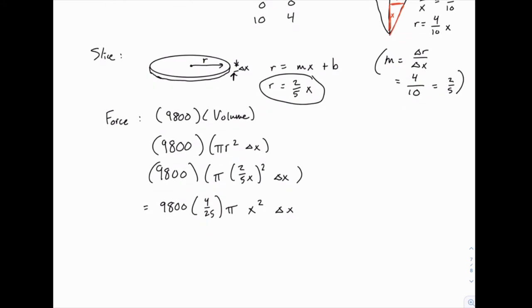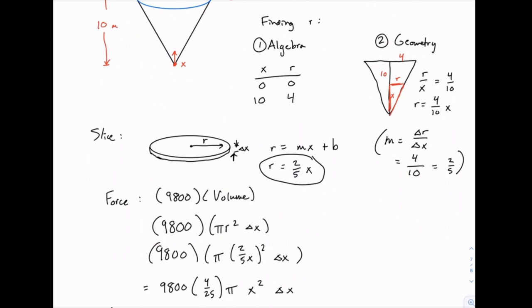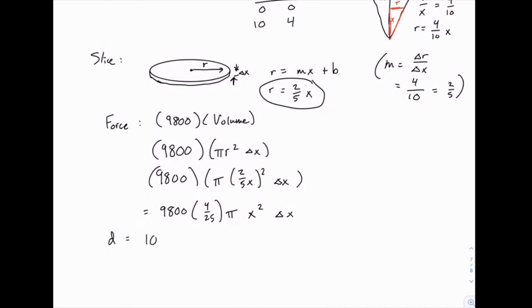So the force we're done with, and then the distance will be a little bit simpler. Coming back to the picture here, if we pick a slice at a position x, we need to think about how far this needs to be lifted. It won't be x, because x would just move it back down to the bottom. We want to go up to 10. So if x is the distance down to the bottom, and 10 is the total distance from the bottom to the top, the difference between those two will be how far we need to lift it. So the distance is just 10 minus x.